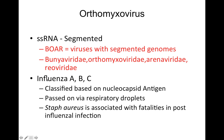Within orthomyxovirus we have influenza A, B, and C, which are separate entities. These are all classified based on nucleocapsid antigens — influenza A, B, and C all have different nucleocapsid antigens. They're passed on via respiratory droplets. Additionally, Staph aureus, the bacteria, is associated with fatalities in post-influenzal infections.